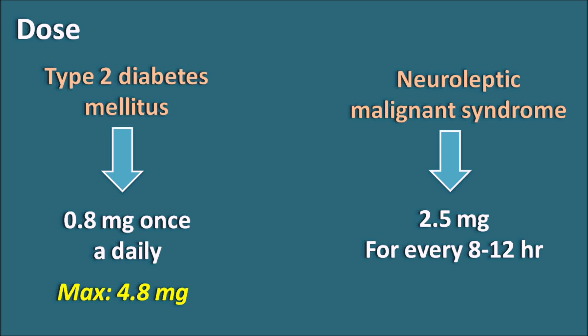In summary, Bromocriptine can be used for multiple clinical uses. The dose for Parkinson's disease is 1.25 mg; for hyperprolactinemia it is 1.25 to 2.5 mg; for diabetes it is started at 0.8 mg; and for Neuroleptic Malignant Syndrome it is started at 2.5 mg. All the actions of Bromocriptine are related to its agonist action on D2 receptors.